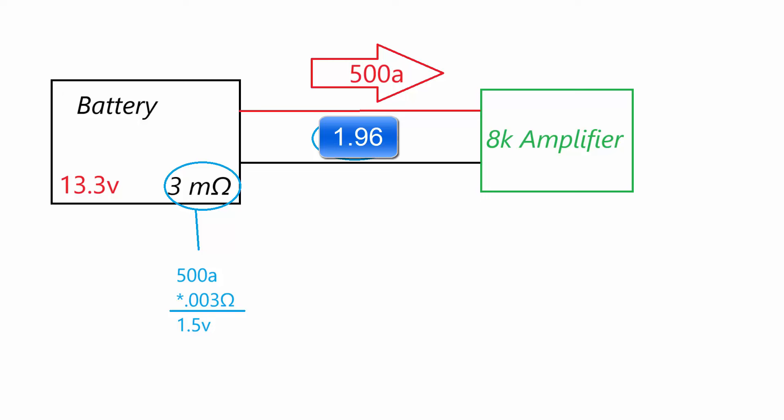So what can you do to fix this problem and make it better? The reality is, in this case, not a lot. And that's because with the three milliohm resistance at the battery, 1.5 volts of our voltage drop is coming from the battery itself, which will leave us with a voltage of 11.8, leaving the battery itself before we even touch the wire. Your best bet in this situation is to either get a better battery or get additional batteries to split the voltage drop between each battery. If we add a second identical battery, it should approximately half the voltage drop.